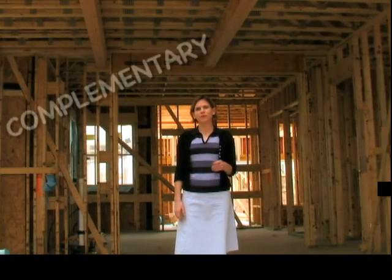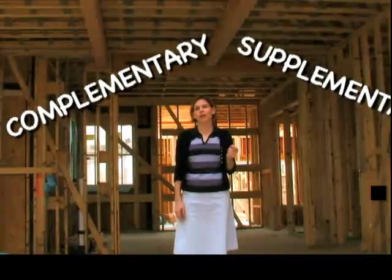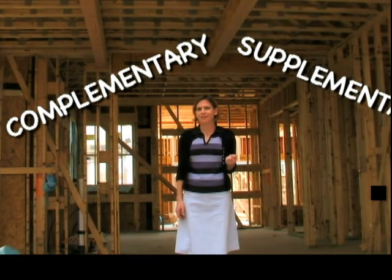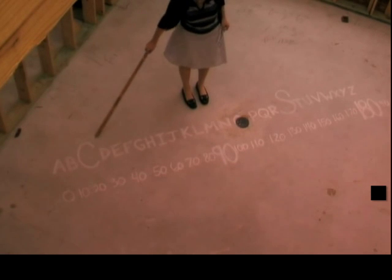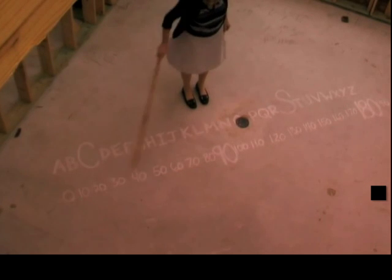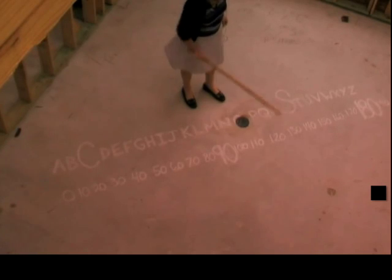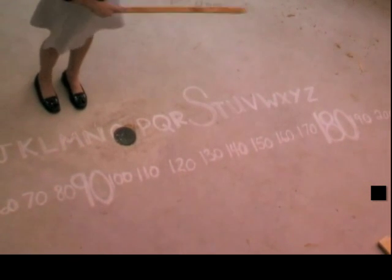It's confusing because complementary and supplementary sound alike, but here are three ways to help you remember them — pick the one that makes the most sense for you. In the alphabet, the letter C for complementary comes before the letter S for supplementary. And on a number line, 90 comes before 180. So C — complementary — goes with 90 degrees, and S — supplementary — goes with 180 degrees.